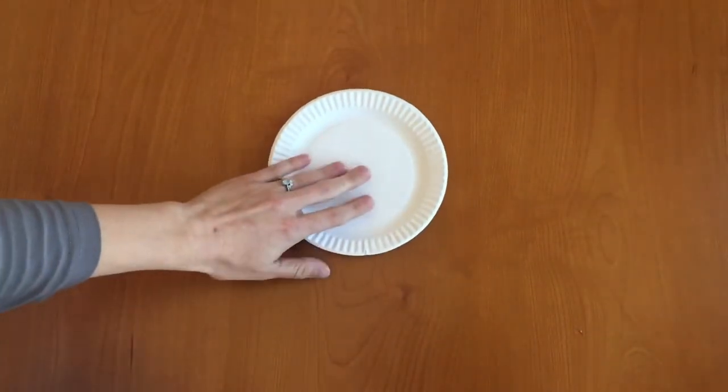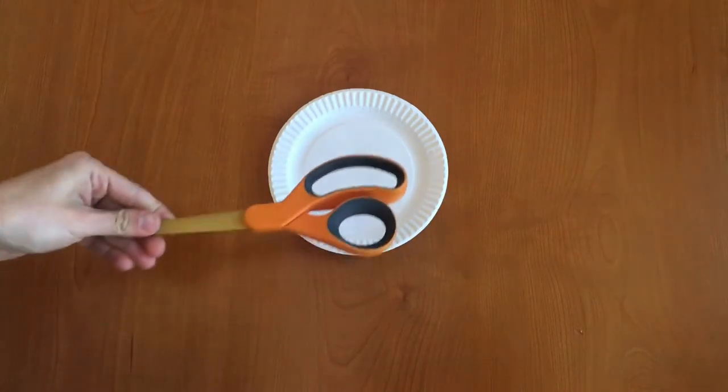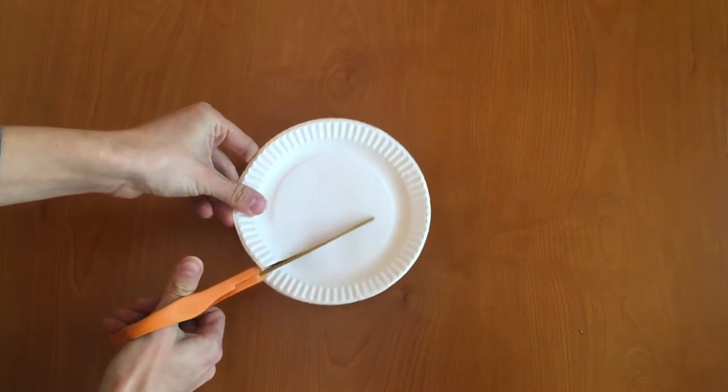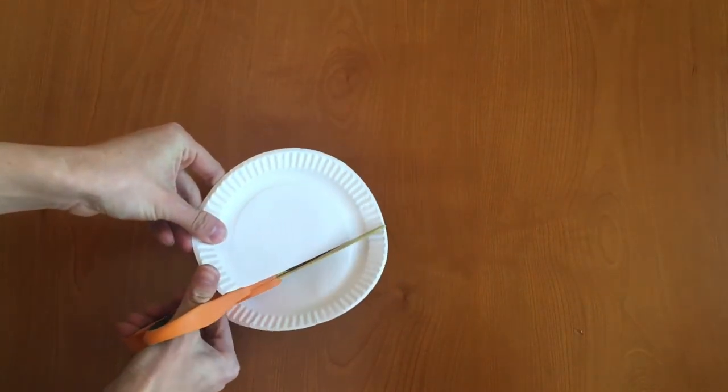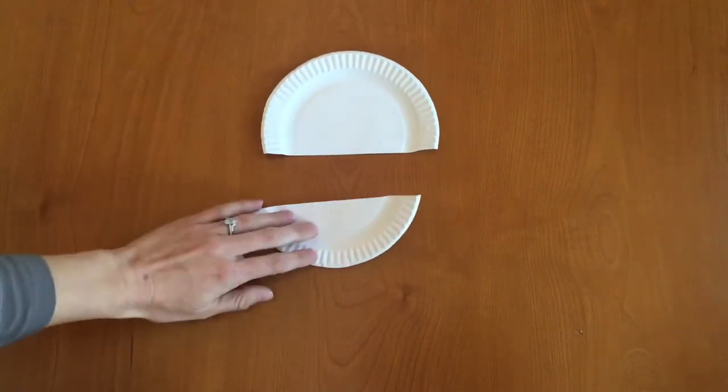Our first step is we're going to take our paper plate and we're going to cut it in half, so carefully using a pair of scissors we're going to cut it in half with one half a little bit bigger than the other, just like that. Great!